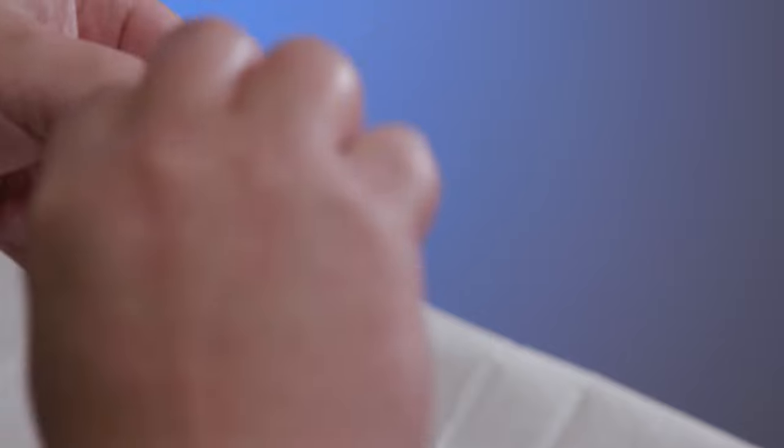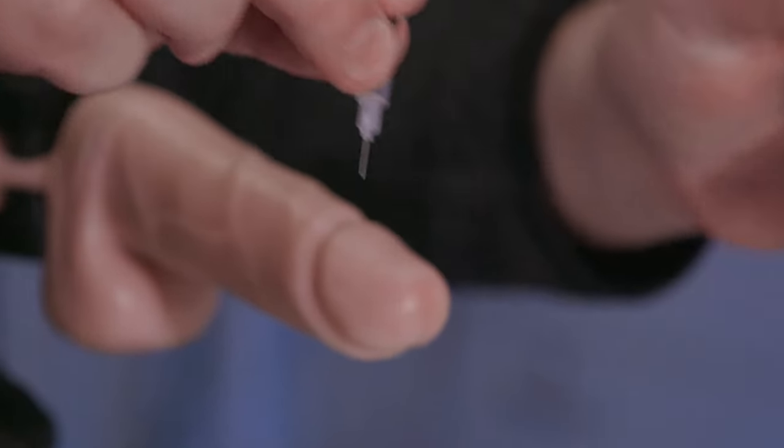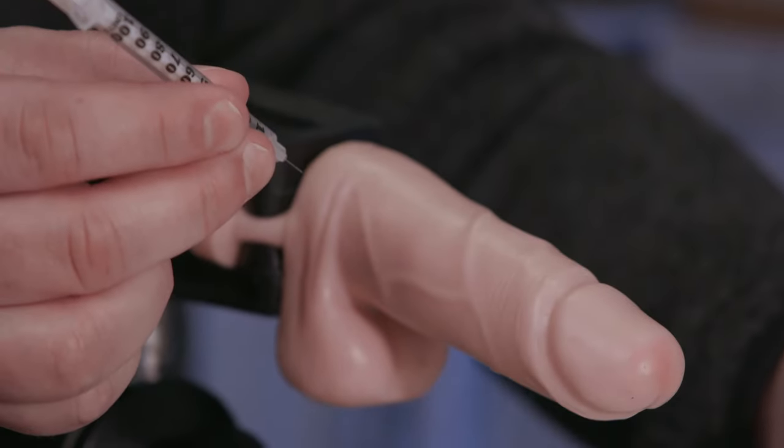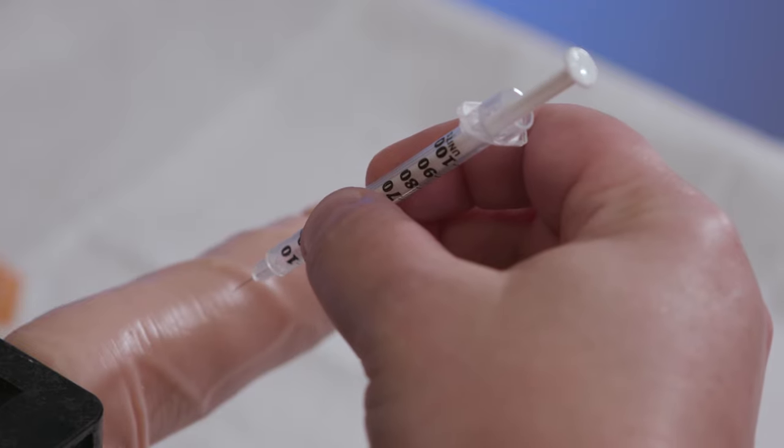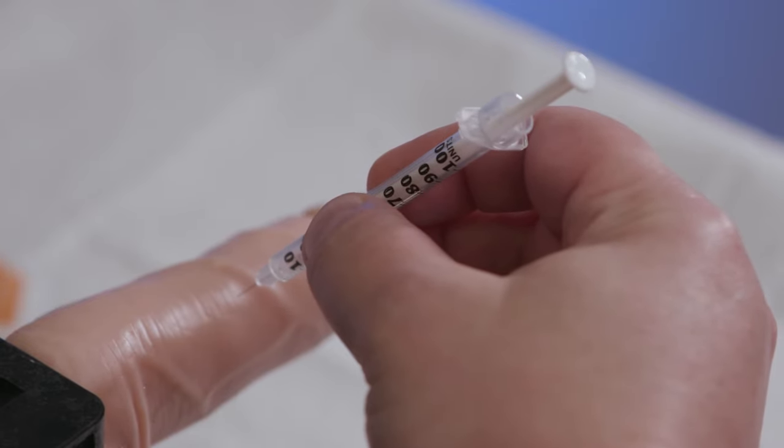Hold the syringe between your thumb, index, and middle fingers, like you'd hold a pen or dart, with the needle facing the floor. Don't touch the plunger yet.